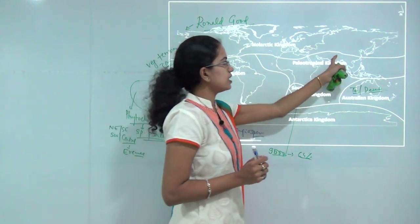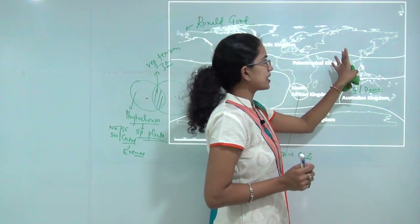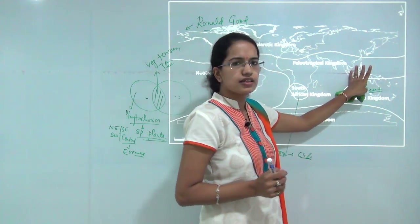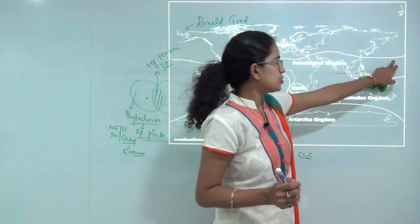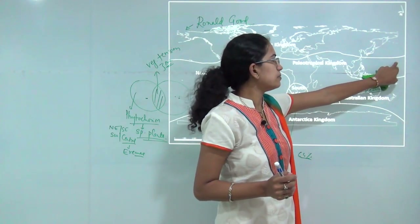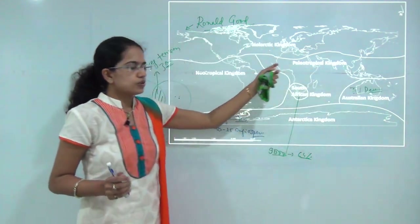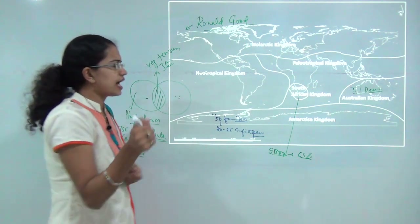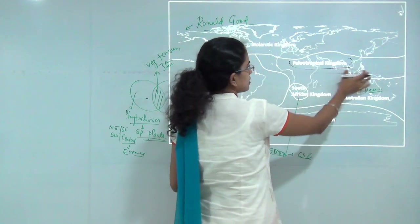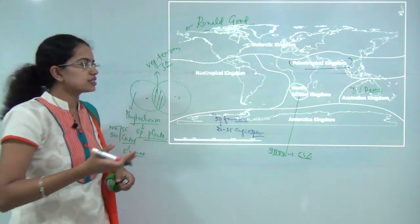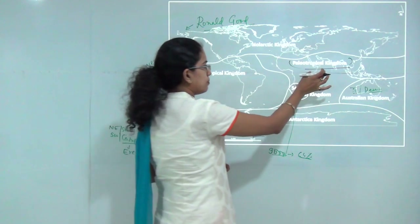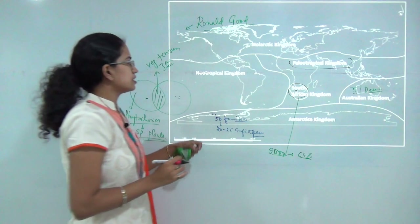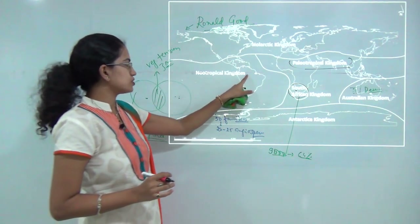The Paleotropical kingdom covers the regions of Africa, Asia including India and China, the island groups of Indonesia, Malaysia, and Papua New Guinea, and the Melanesian island group including Hawaii. It has huge diversity in fauna, though still less compared to the South African region.